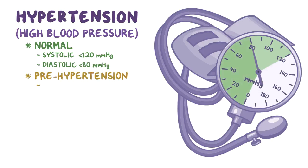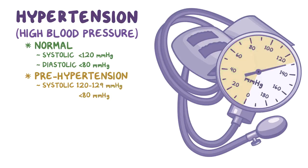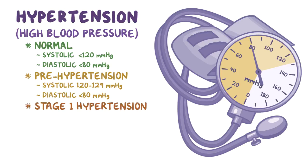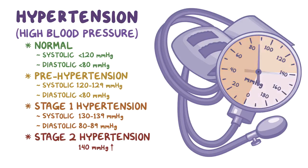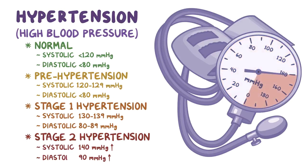Prehypertension is when systolic blood pressure is between 120 and 129 mmHg, and less than 80 mmHg on the diastolic side. Stage 1 hypertension is between 130 and 139 mmHg on the systolic side, and between 80 and 89 mmHg on the diastolic side. Stage 2 hypertension is defined as anything that is 140 mmHg or higher on the systolic side, and 90 mmHg or higher on the diastolic side.